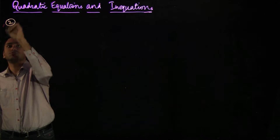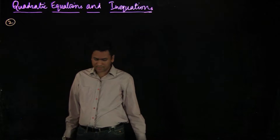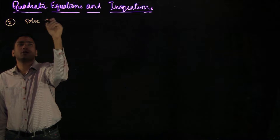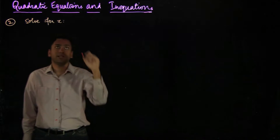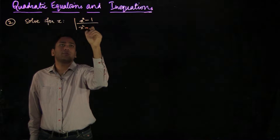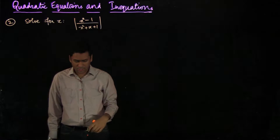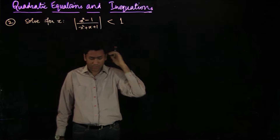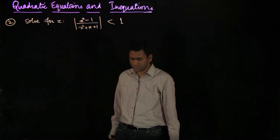We will now be continuing with the solved examples on the topic of rational functions of x. The next problem says you need to solve this inequality: solve for x where the absolute value of x squared minus 1 over x squared plus x plus 1 should be less than 1.